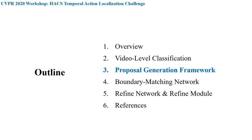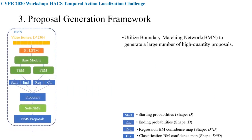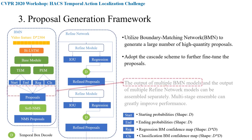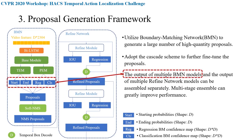Next, I will introduce our proposal generation framework. We first use BMN to generate a large number of proposals, then adopt a cascade scheme to further fine-tune the proposals. We assemble the output of TEM and PEM from multiple BMN models. In this way, the quality of proposals generated by BMN can be greatly improved.